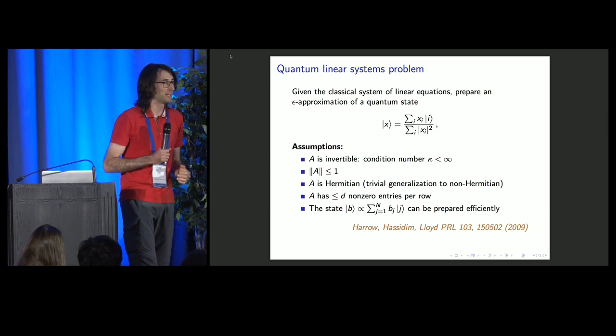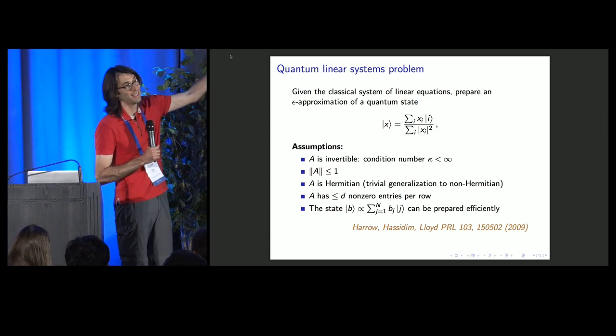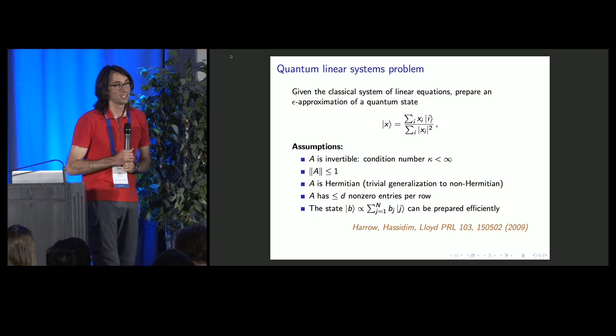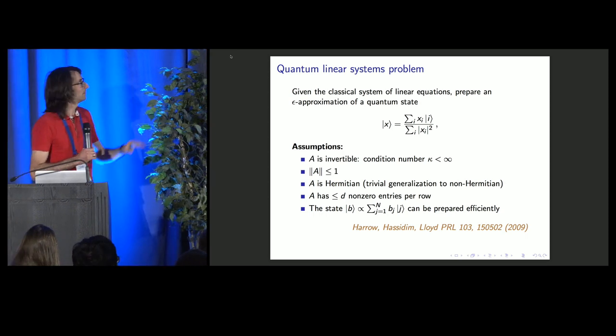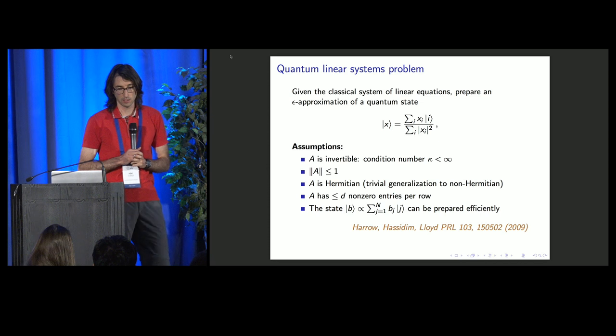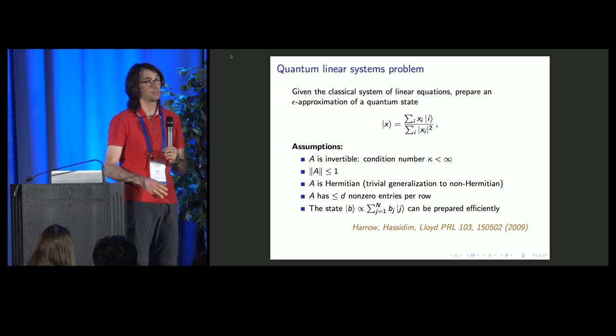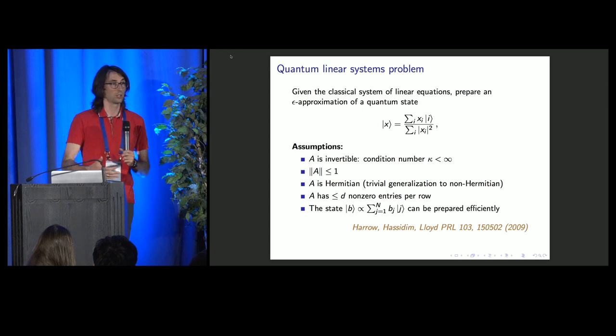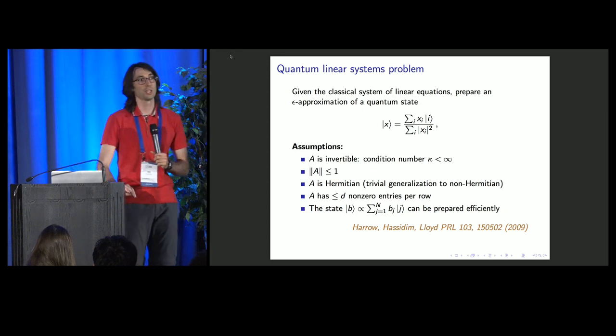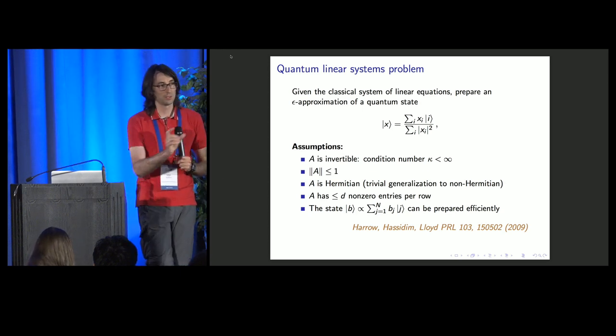In general, you can only get an exponential speedup for the cases in which you can prepare B initially. There is a nice paper by Scott Aaronson about read the fine print that spells out all the caveats on all the conditions under which actually you do get exponential speedup. Which seems pretty restricted, but. Are there any other questions?